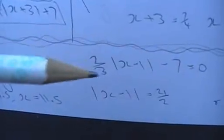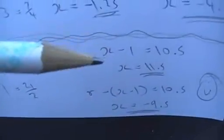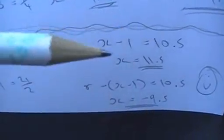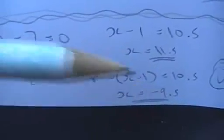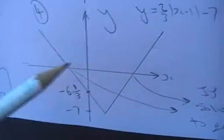You want this whole thing to equal zero, rearrange it to get just the modulus bit. Add seven to both sides, multiply by three, divide by two, and you get x minus one is 21 over two, which is 10.5. Because it's modulus, you look at two solutions: one where x minus one is 10.5, so x is 11.5, and one where minus x minus one is 10.5, so x is minus 9.5. So 11.5 and minus 9.5, perfect.